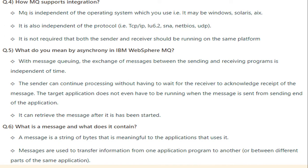What do you mean by asynchronous in IBM MQ? With message queuing, the exchange of messages between the sending and receiving program is independent of time. The sender can continue processing without having to wait for the receiver to acknowledge receipt of the message. The target application does not even have to be running when the message is sent — it can retrieve the message after it has been started.